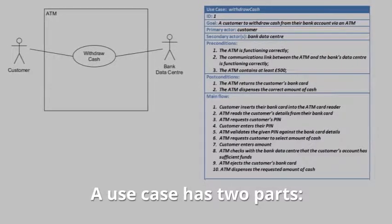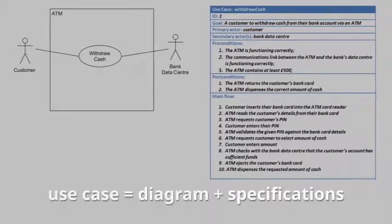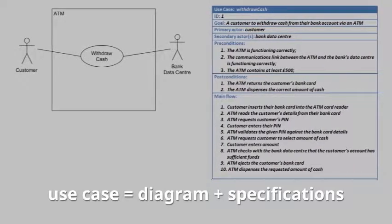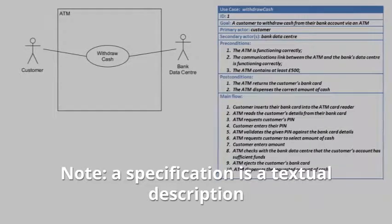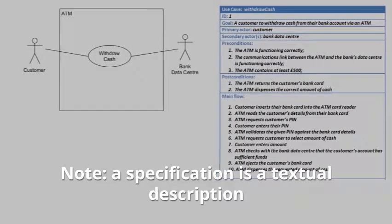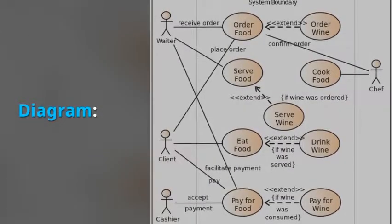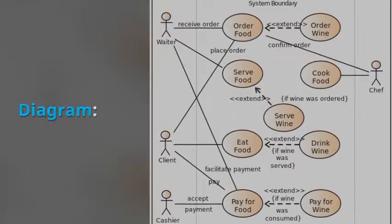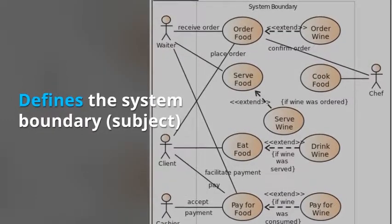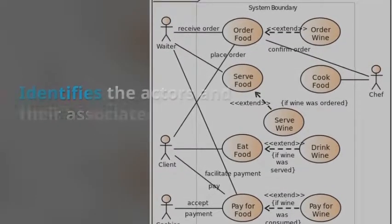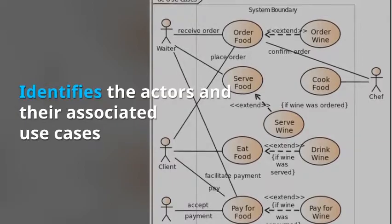Representing Use Cases. A use case has two parts: a use case diagram and specifications. A specification is a textual description. The diagram defines the system boundary and identifies the actors and their associated use cases.